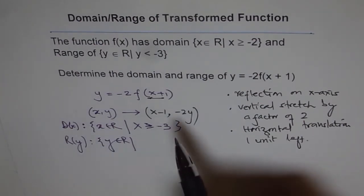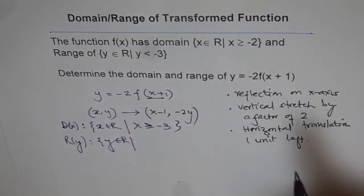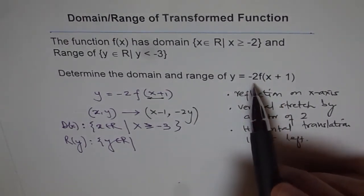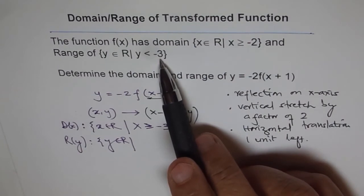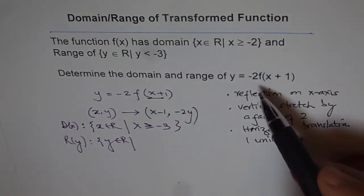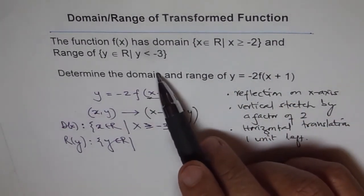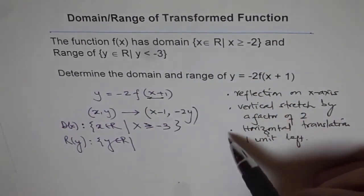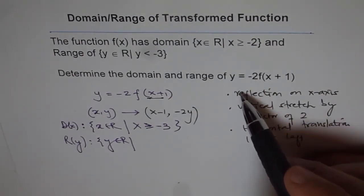What's happening is the y-value is getting reflected. In the original function, y < -3, meaning it goes downward. With the -2 multiplication, it flips upward.